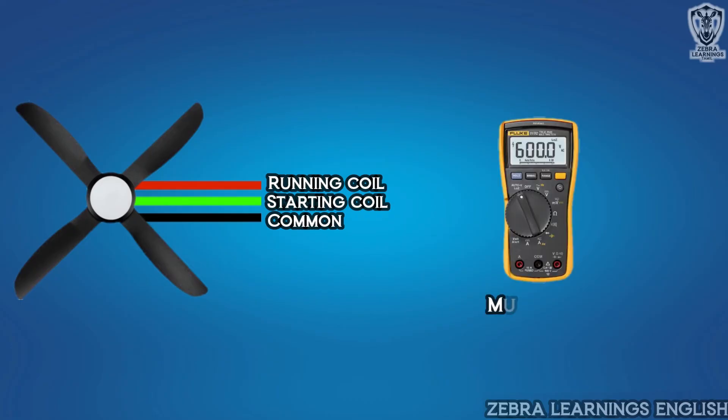If not, use a multimeter to check the resistance, and find out which is the running terminal, and which is the starting terminal. Now, let's know how to give connection.